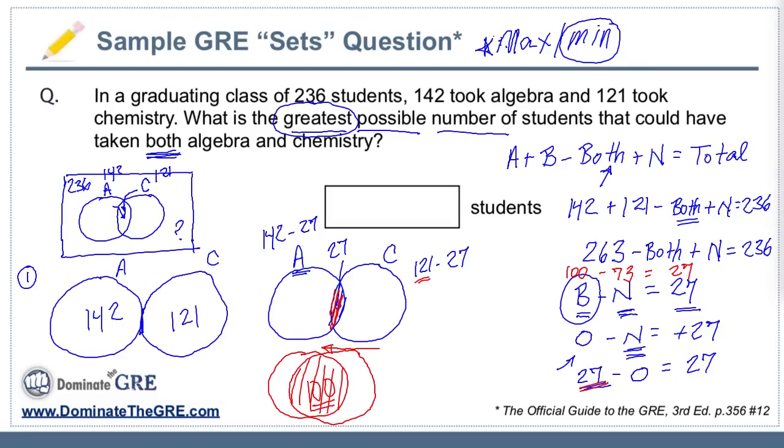What if this big circle represents algebra and the entire chemistry circle is inside the algebra circle, meaning every single person that takes chemistry also takes algebra? Therefore the overlap is literally 121, and the only difference is however many more people there are taking algebra - 142 minus 121. That would leave 21 people in the small sliver who only take algebra. The point is the entire group of chemistry is inside, and therefore 121 take both chemistry and algebra.